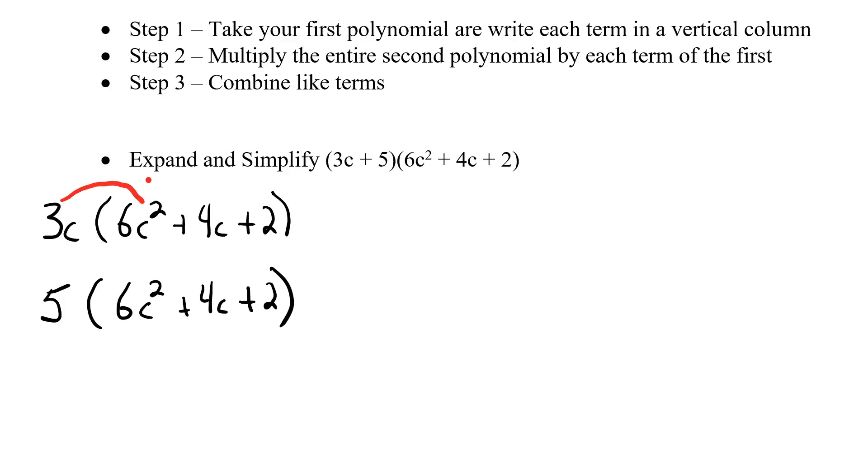So I'm going to go there first. 3c times 6c squared, 3 times 6 is 18. C times c squared gives me c to the third. Second one, 3c times 4c. 3 times 4 is positive 12, c times c is c squared. And then finally, the last ones. 3c times 2 gives me positive 6c. First one's done.